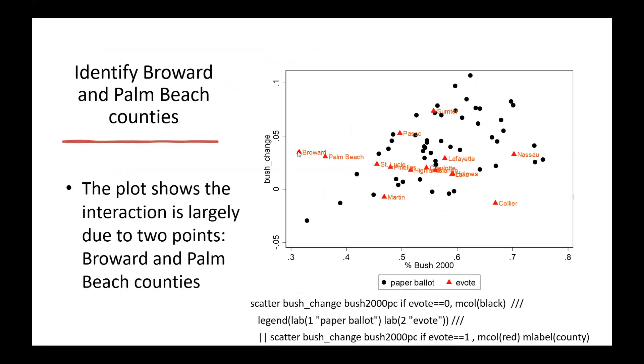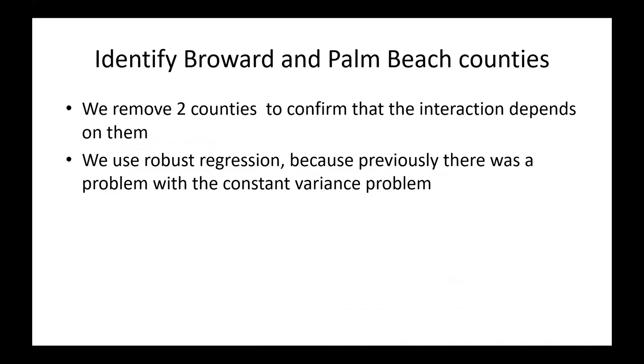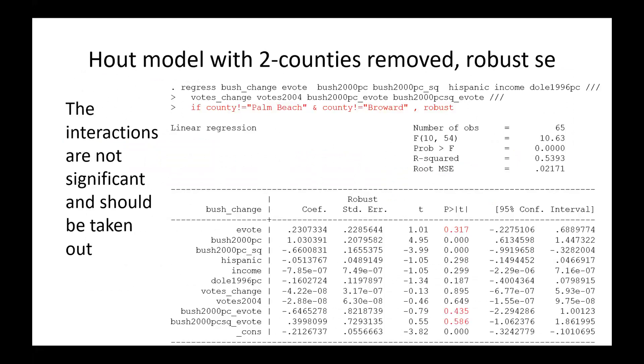Those are two of the additional high leverage points that showed up when we used the model. And there are also two of the three lowest points for the variable Bush 2000. So they are high leverage because they are very low down here. The conclusion hinges on these two observations. So if this is true and the interaction goes away when we take these two out, we can actually test that in the model. So let's go to a model and see whether when we take those two counties out, there's no longer an interaction.